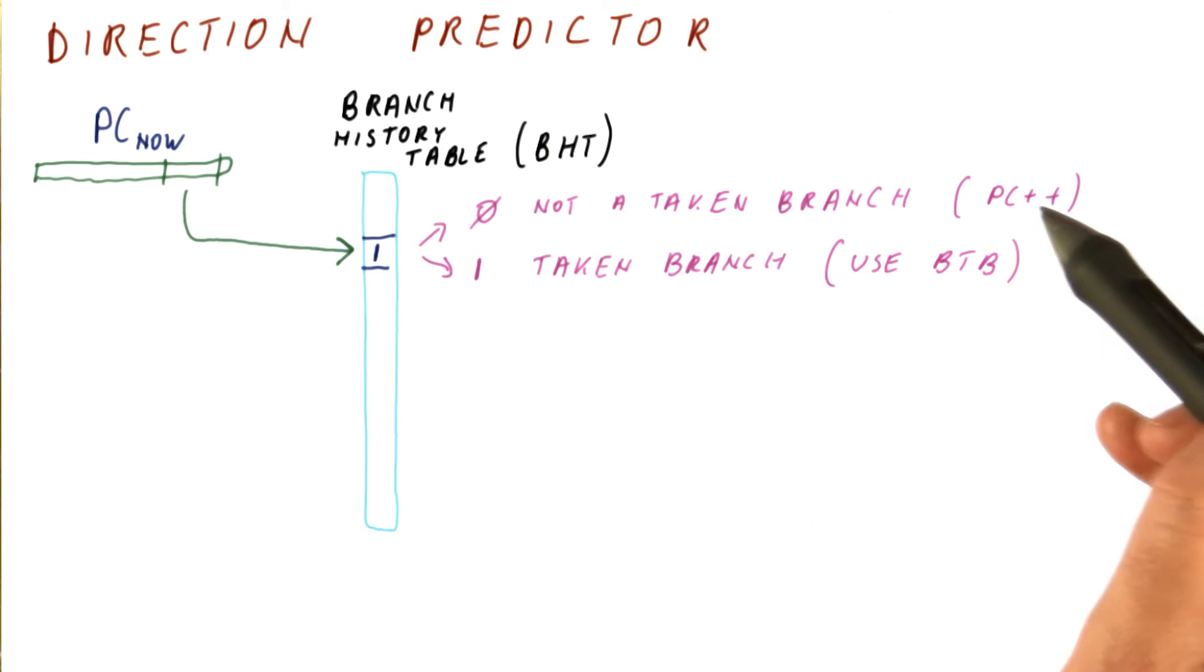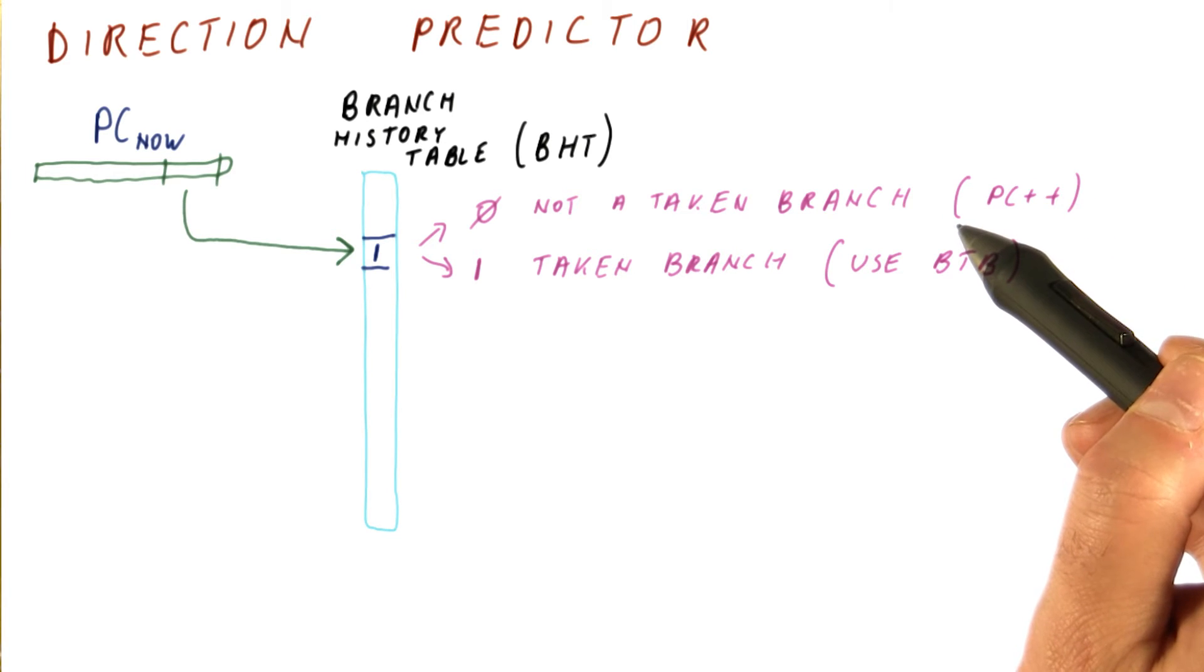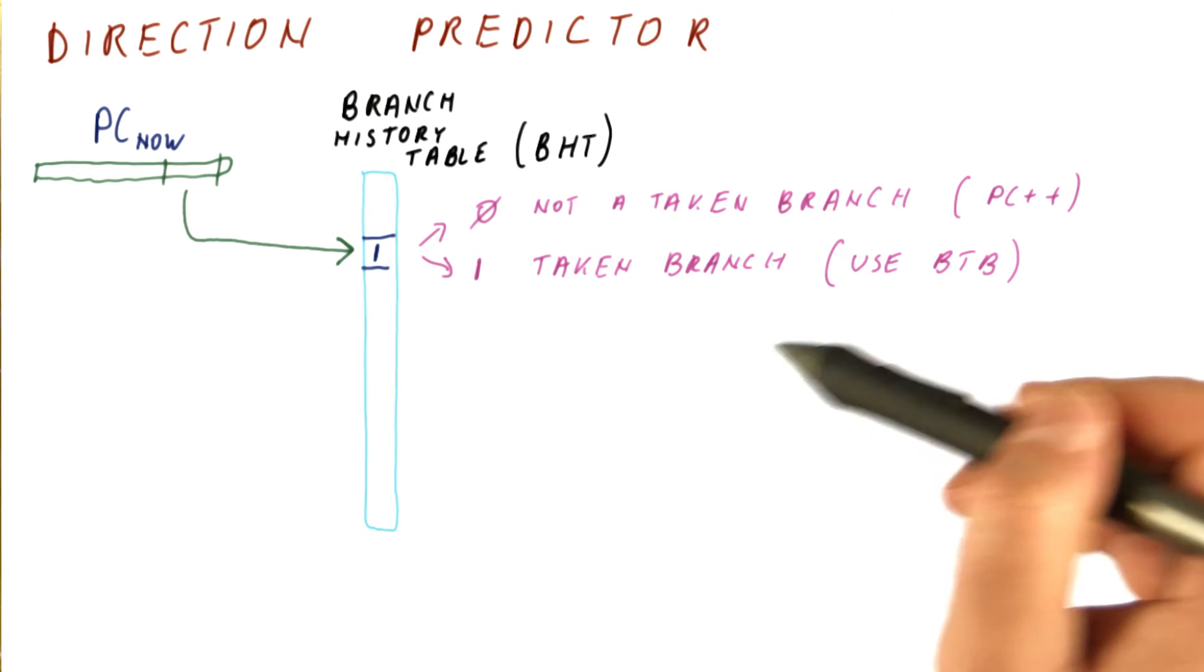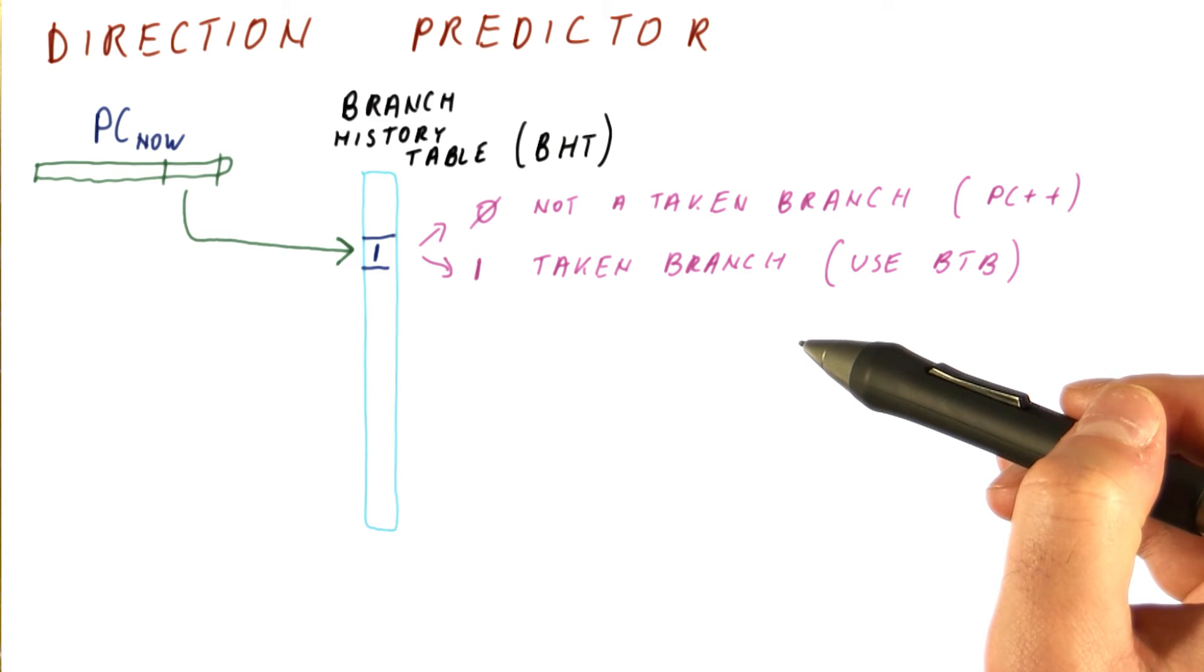If we get a zero, if we decide that the branch is not taken or that the instruction is not a branch, then we put a zero here and we don't update the BTB so that we can use the BTB only for target addresses that we really need the BTB for.